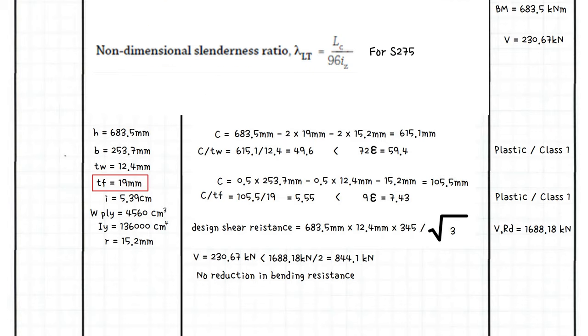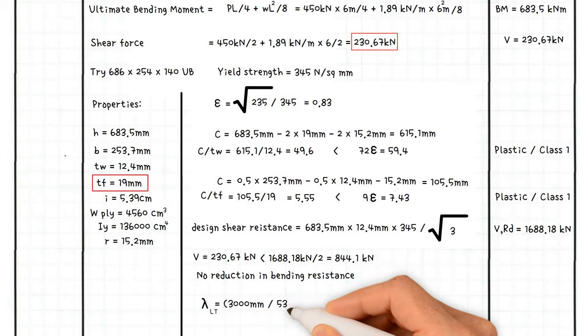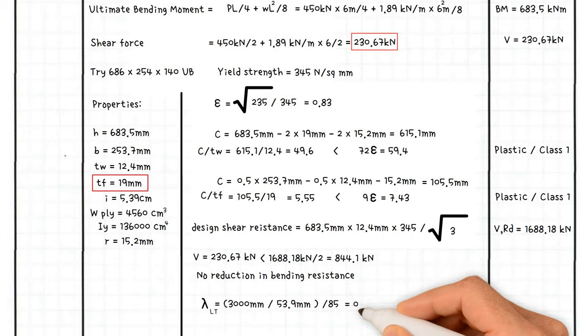For S-355 grade steel, non-dimensional slenderness lambda equals the distance between restraints to the compression flange of the beam divided by the radius of gyration about the minor axis of the beam divided by 85, which equals 3,000 millimeters divided by 53.9 millimeters divided by 85. This results in a value of 0.655.